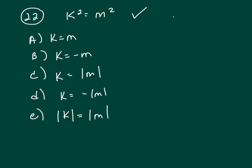If you square a negative 2, you're going to get a positive 4, right? So k equals m, k could be 2, or m could be negative 2, and you still get this.